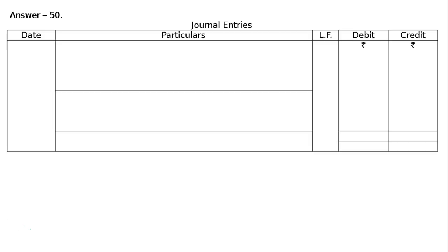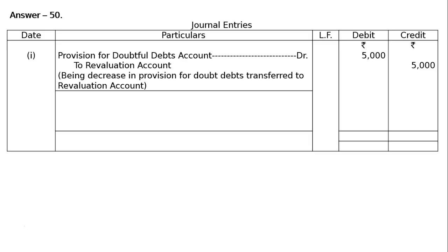First entry is provision for doubtful debts account debited to revaluation account — decrease in the provision for doubtful debts transferred to revaluation account, 5,000 is nullified. This is the only journal entry which should have been passed, but it is written as past journal entries.